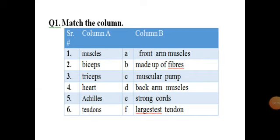Some written work is here now. You have to practice it, learn it by heart, and then write it in your registers or on loose sheets. Match the column: 1. Muscles — made up of fibers. 2. Biceps — front arm muscles. 3. Triceps — back arm muscles. 4. Heart — muscular pump. 5. Achilles — largest tendon. 6. Tendons — strong cords.